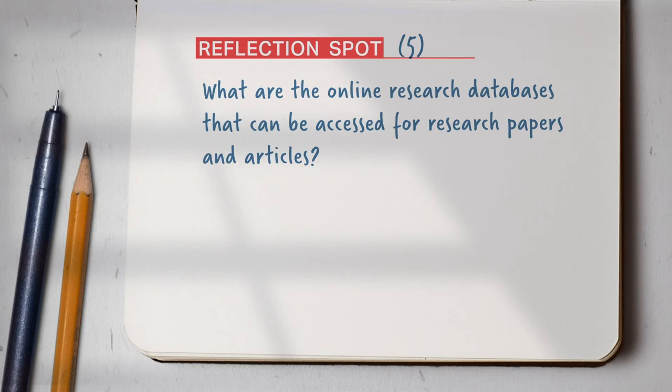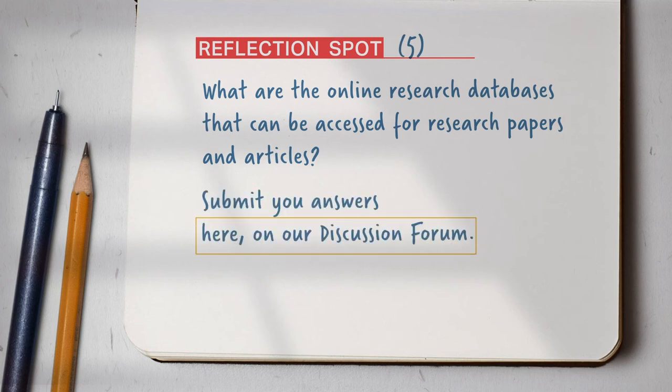Can you think of any online research databases where you could access existing research papers and articles? Write down the ones you can think of and share them on the discussion forum with your peers. There are various authentic research databases. Many of you may have mentioned Google Scholar. Then there are JSTOR, Project Muse, and Scopus, where some papers are open access and others which you can access through your institution. Academia.edu and ResearchGate are two portals where you can access a wide range of papers after signing in.